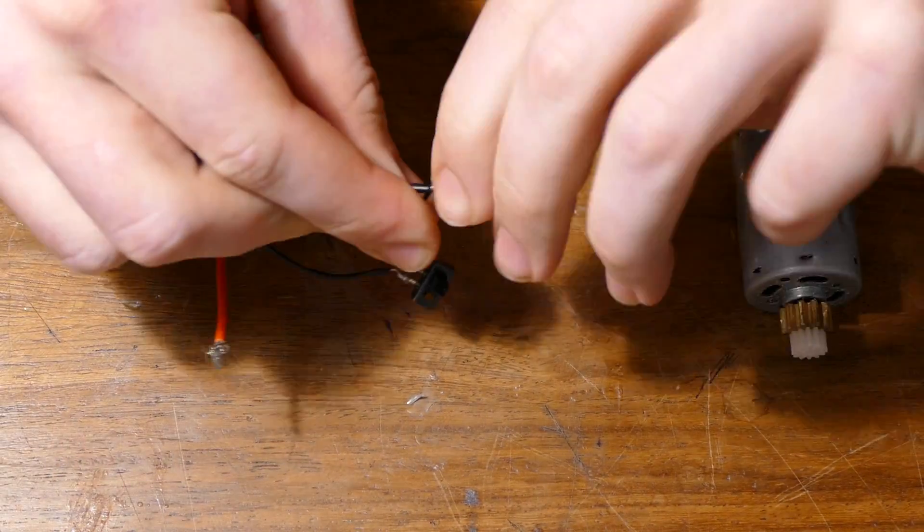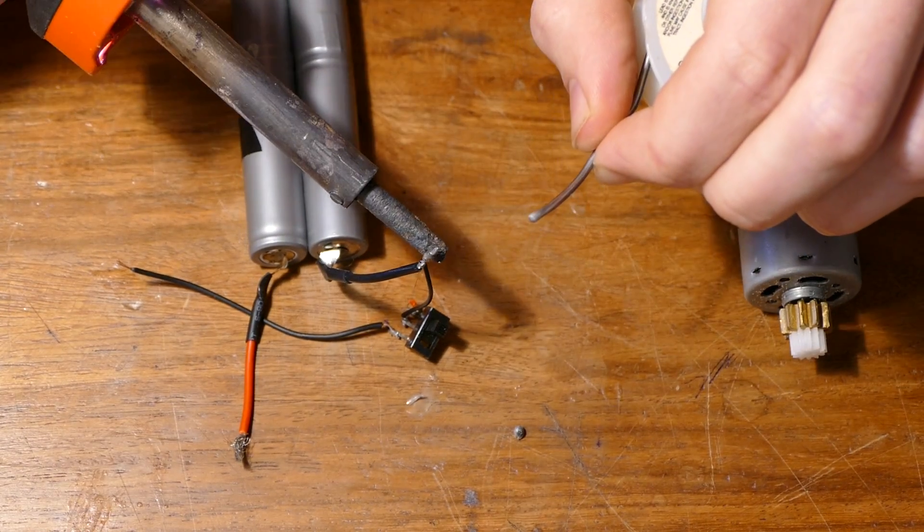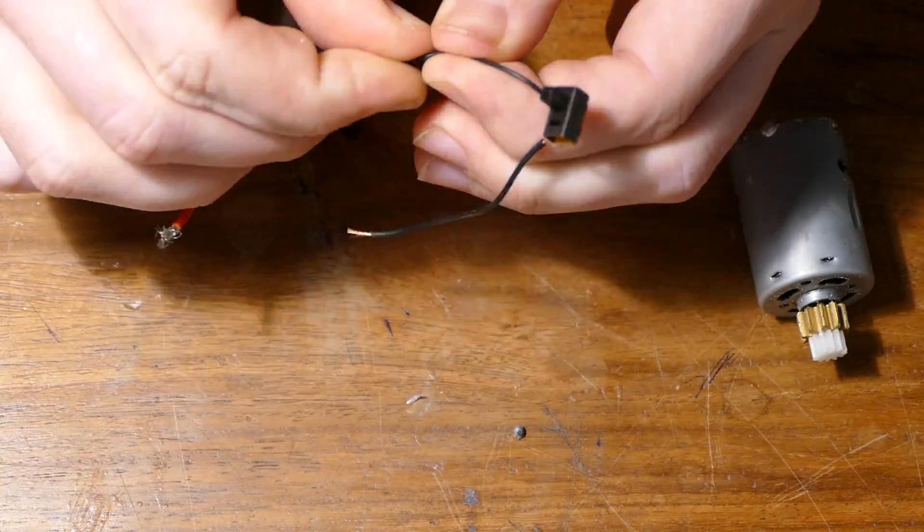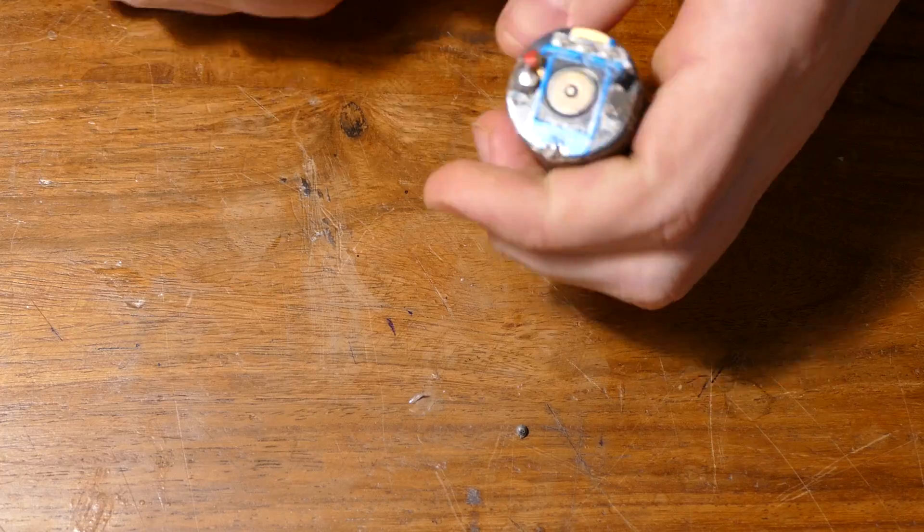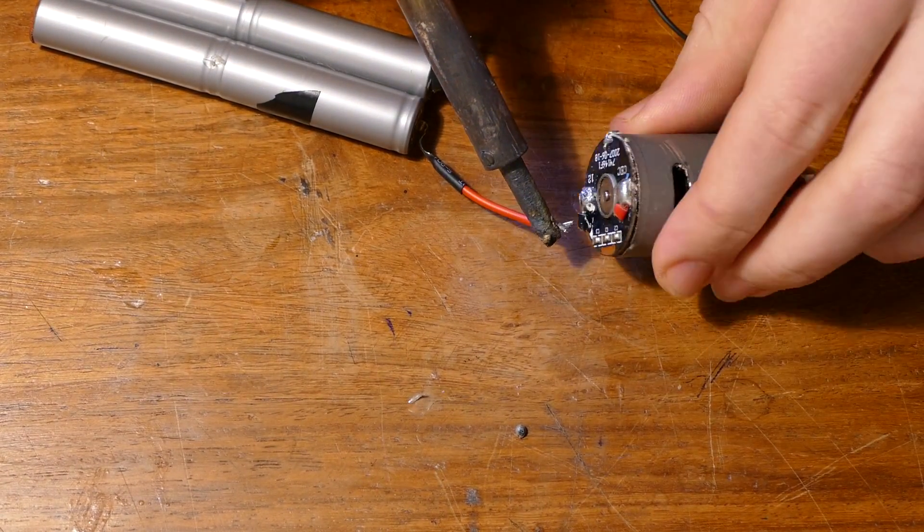First, you're going to need to solder one lead of your switch to your battery. Then solder the other lead to the motor. Remember to cover everything with electrical tape or heat shrink tubing.